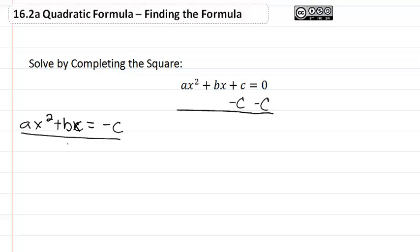Then we divide everything by a, because we want our coefficient in front of our x squared to be one. So now we have x squared plus b over a times x equal to negative c over a.